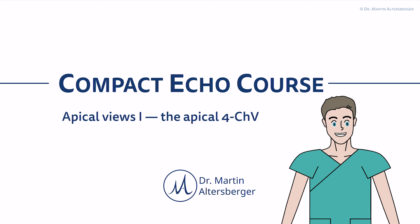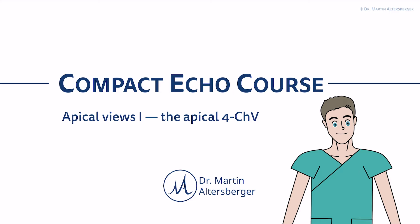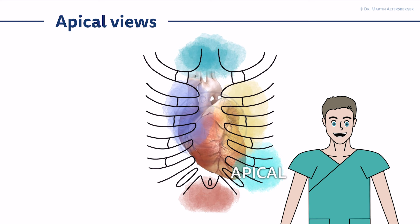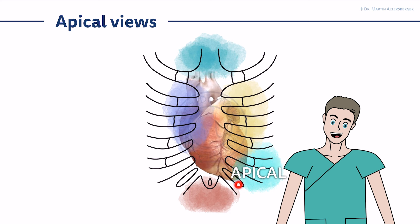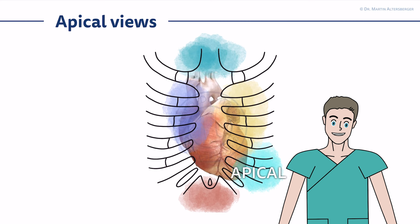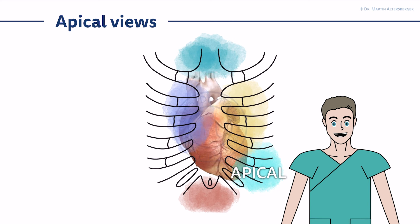Welcome back to the Compact Echo Course. In the next few videos we will talk about the apical views, and we will start with the apical four chamber view. The apical views are located, as the name implies, at the apex of the heart. You especially want to focus on the left ventricular apex. It will be in the range of the fifth intercostal space where you find the apical four chamber view.